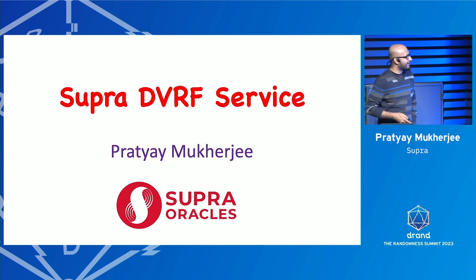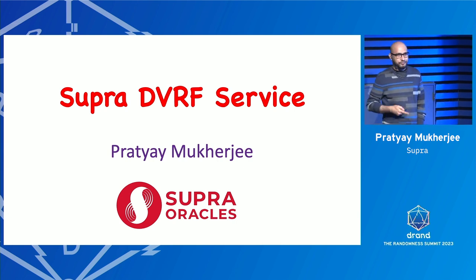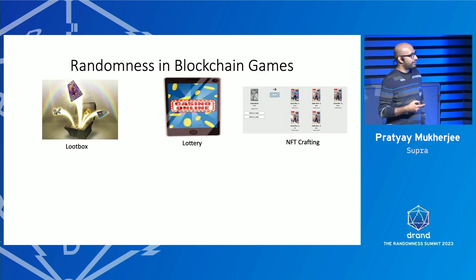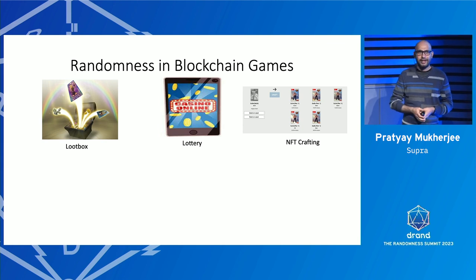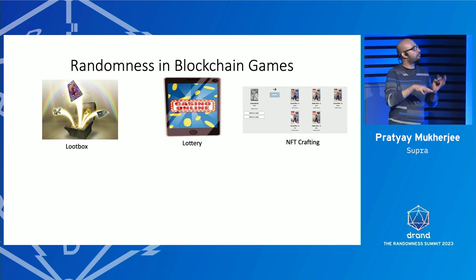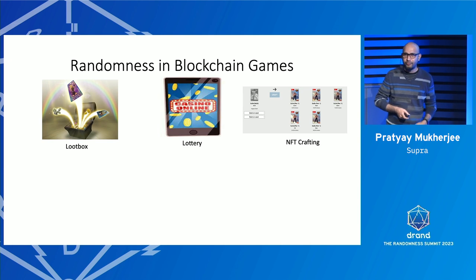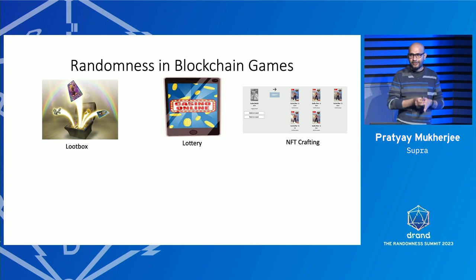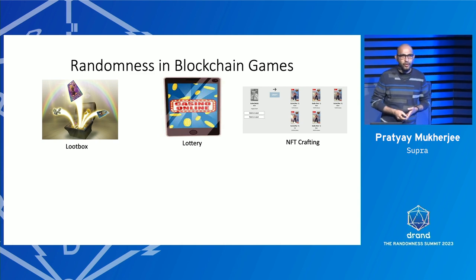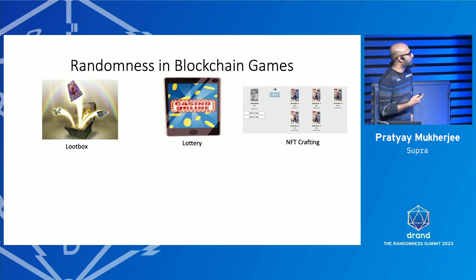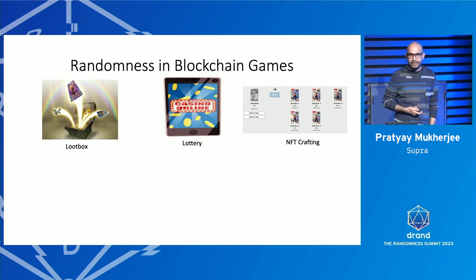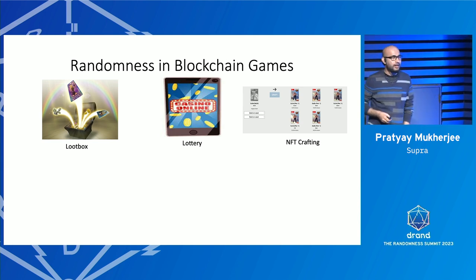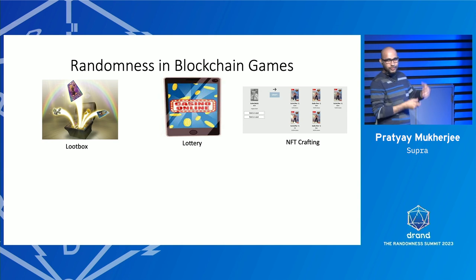This talk was prepared for a slightly more basic audience, so some motivations will be passed through quickly. The motivations come from receiving requests from blockchain gaming clients — loot boxes, lotteries, NFT crafting — which all have their own use cases. There is a nice blog by Chainlink describing all sorts of use cases. Overall, the idea is that on-chain games try to generate randomness in a smart contract.